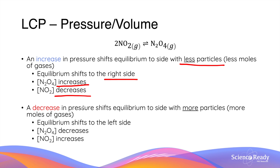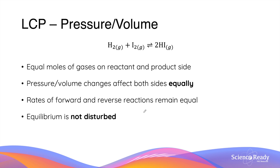On the other hand, when we have a decrease in pressure, the equilibrium position will shift to the side with more gas particles or more moles of gas. In this reaction, that is the left-hand side. So the equilibrium will shift to the left side of the reaction, and as a result, the concentration of N₂O₄ decreases while the concentration of NO₂ increases.